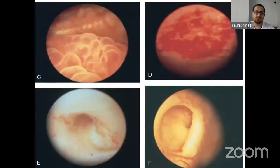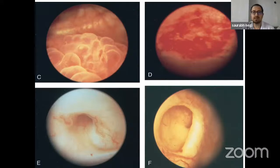Cystoscopic finding images show: image one demonstrates granulomatous growth, and image two shows mucosal ulcerations. The remaining images show a classical golf-hole ureter, which is generally found in tuberculosis patients.